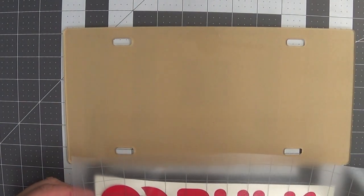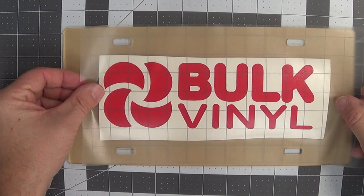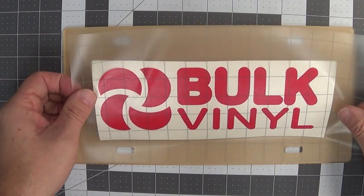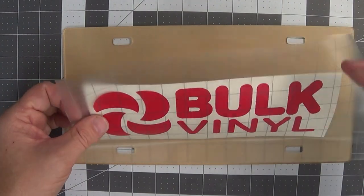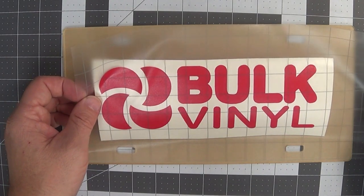Now there's a couple ways that we can do this. We're just going to kind of visually center it here. I'm not going for perfection. But there's two kind of methods here. One where you just go ahead and remove the entire piece of paper backing.